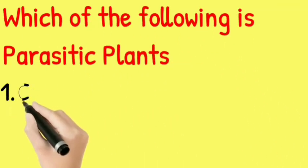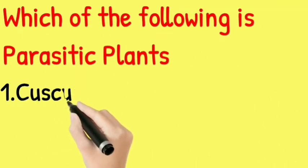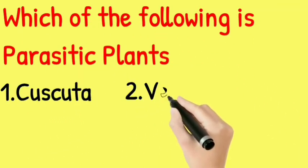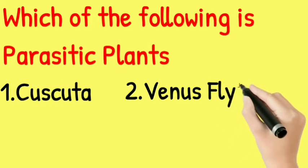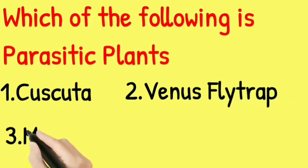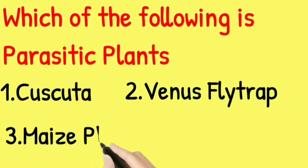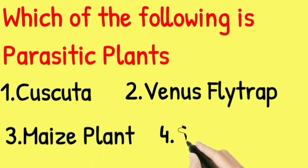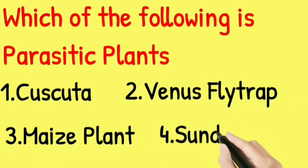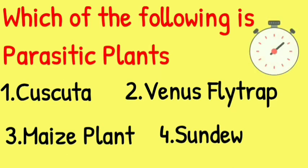Which of the following is a parasitic plant? The options are: Cuscuta, Venus Flytrap, Maize plant, and Sundew. Your time starts now!